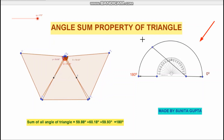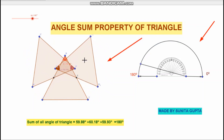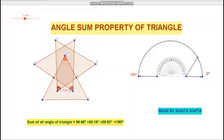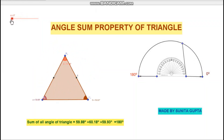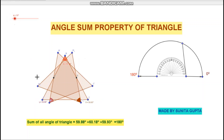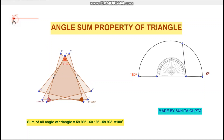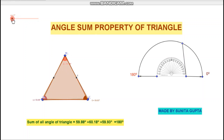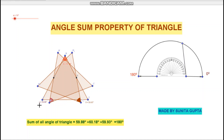Now, if we see this figure, this is the shape of a triangle. If I start the animation, angle A and gamma are the same angle, angle B and beta are the same angle, and angle C and delta are the same angle.